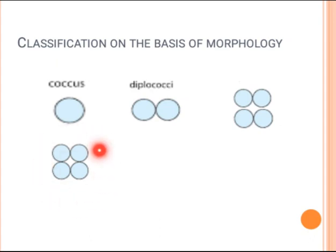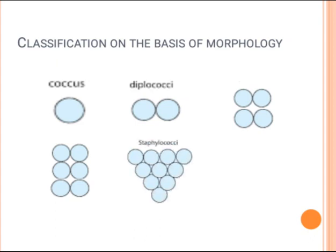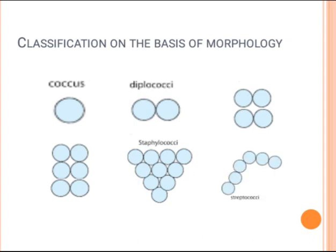When two more cocci attach below two-plane cocci, it forms three-plane cocci. Some cocci form clusters in the form of grapes, and these are known as staphylococci. When cocci form chains, it is known as streptococci. On the basis of cocci arrangement, we can classify bacteria.